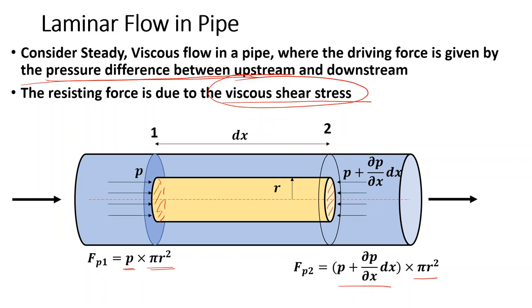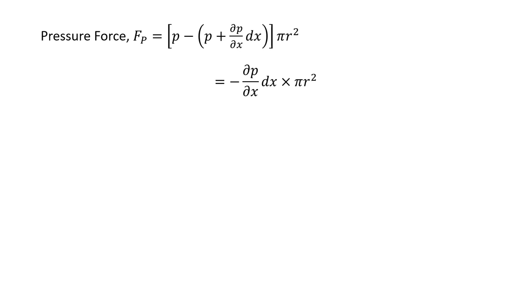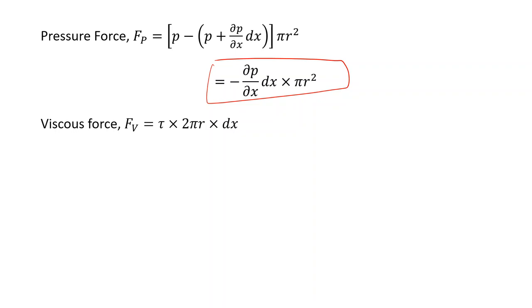This inner cylinder moves at a different velocity than the surrounding layer, so it is resisted by shear stress tau acting over the curved surface area of the cylinder, which is 2πr * dx. The net driving pressure force is the difference of the two pressure forces, giving: Fp = -(∂P/∂x) * dx * πr². The viscous force is tau * 2πr * dx, acting in the opposing direction.